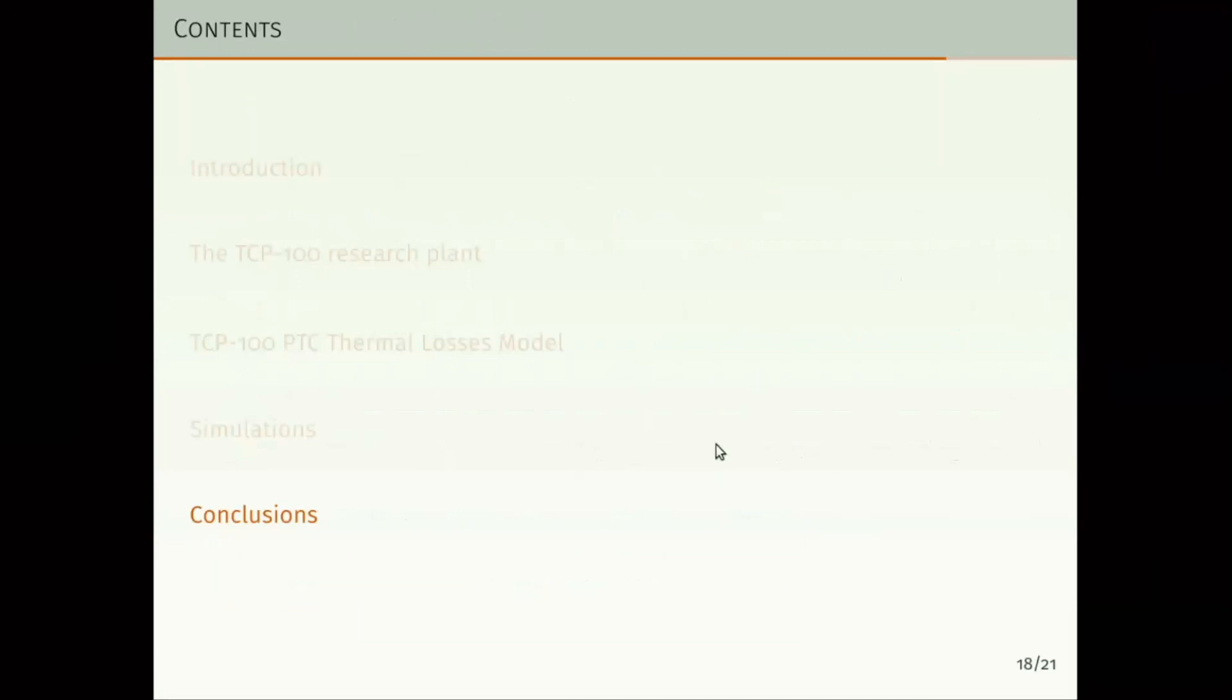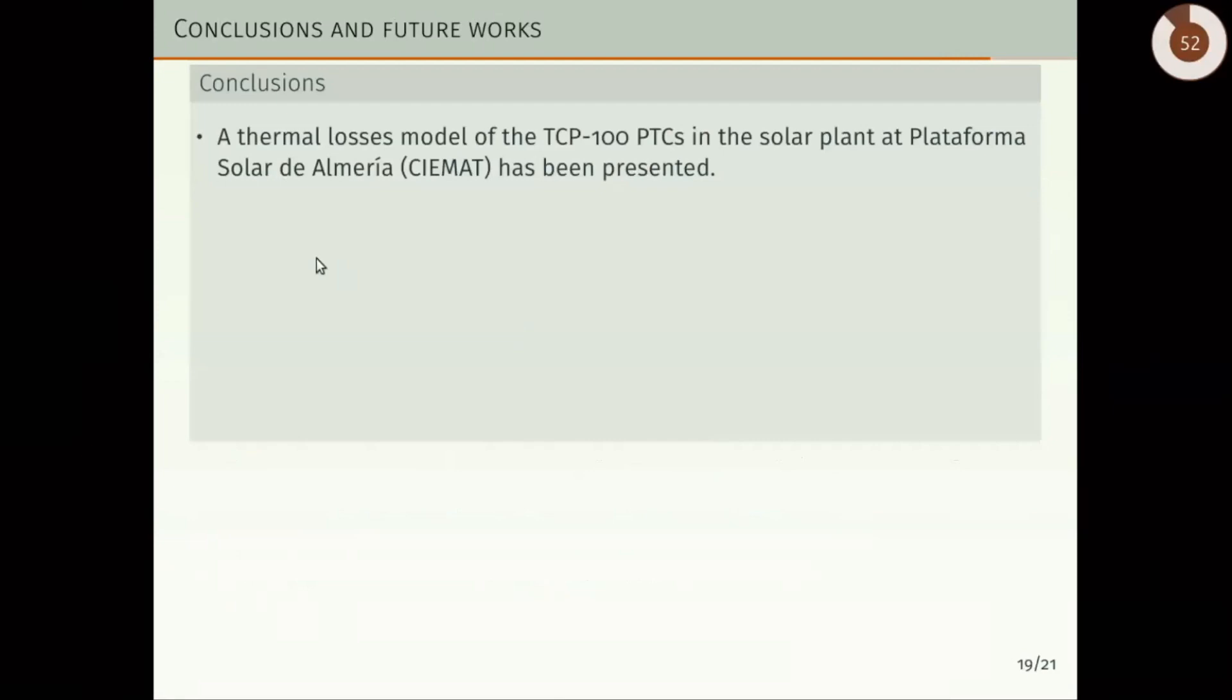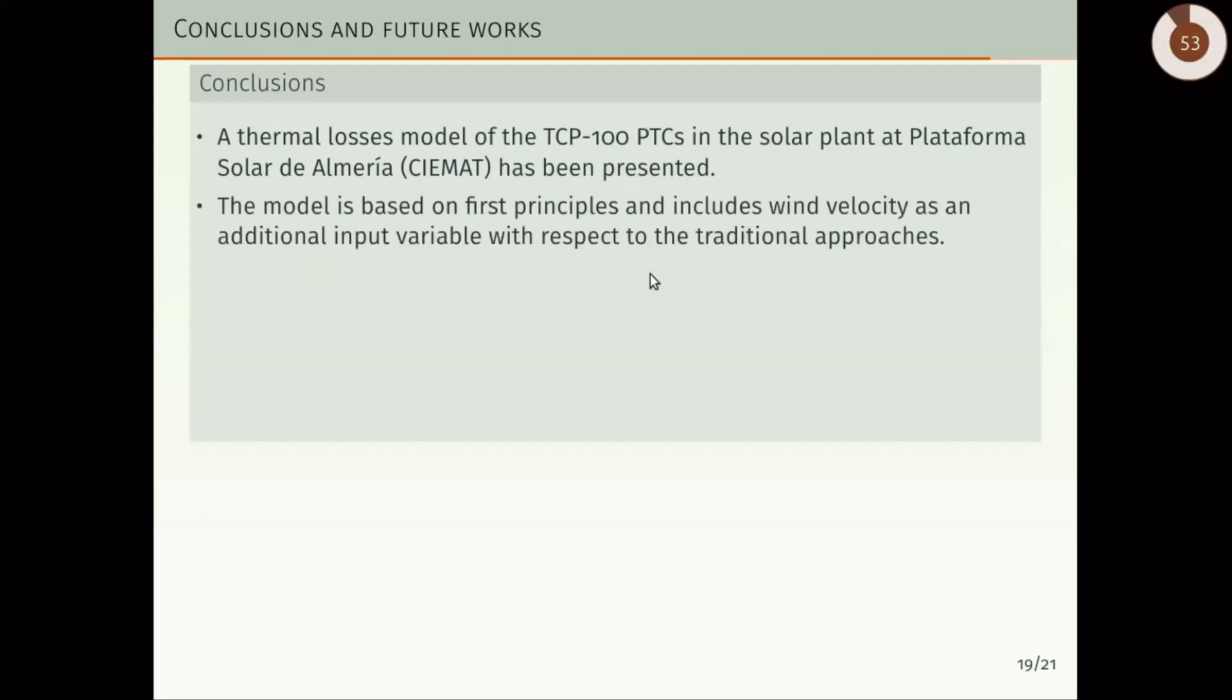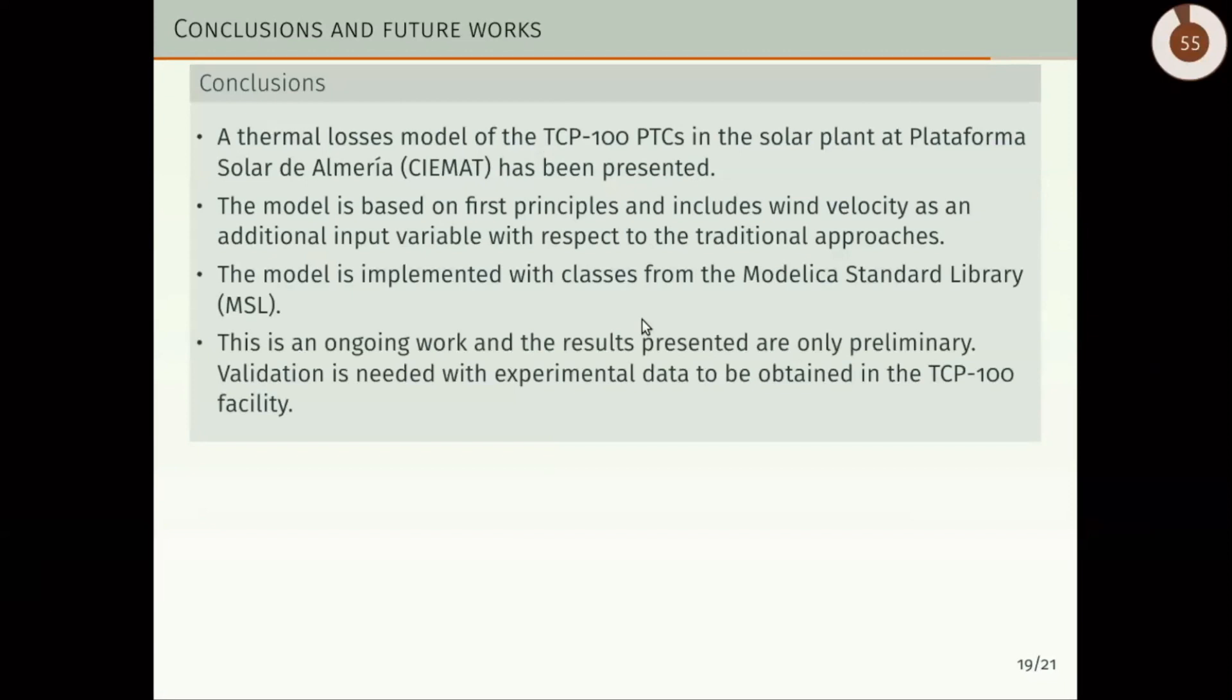In the conclusion section, we can say that a thermal losses model of the TCP-100 parabolic trough collector in the Plataforma Solar de Almería has been presented. The model is based on first principles and includes wind velocity as an additional input variable with respect to the traditional approaches. The model is implemented with classes from the Modelica Standard Library. This is an ongoing work and the results presented are only preliminary. Validation is needed with experimental data to be obtained in the TCP-100 research facility.